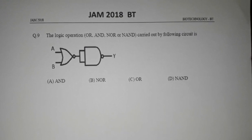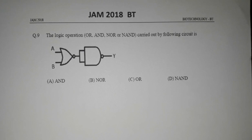In question number 9, there is a circuit containing two successive gates. The first one is a 2-input NOR gate and the second one is a 2-input NAND gate. The question asks if the logic operator carried out by the circuit is OR, AND, NOR, or NAND gate.